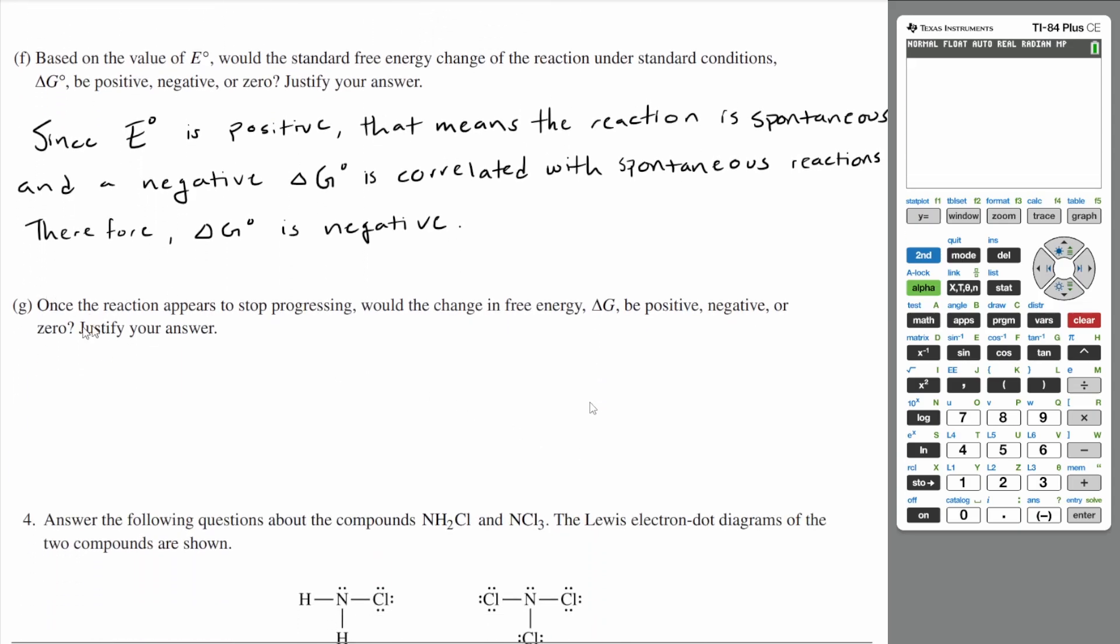Let's go to G, which is our last part. Once the reaction appears to stop progressing, would the change in free energy delta G be positive, negative, or zero? Well, if the reaction stops progressing, then that means our free energy is zero. It stops progressing because it's the lowest energy point of the system. So delta G would be zero. All right. So since the reaction stops progressing, the system has reached equilibrium, which means your change in free energy is equal to zero.